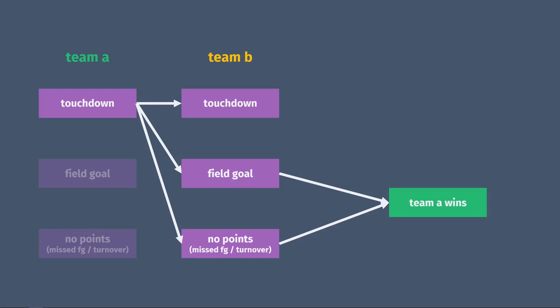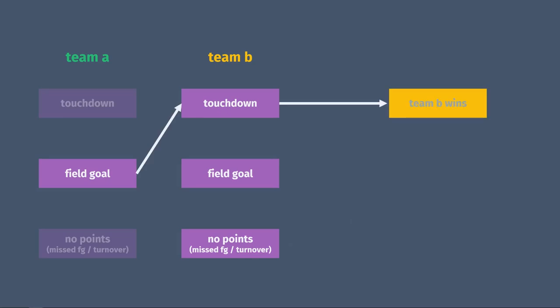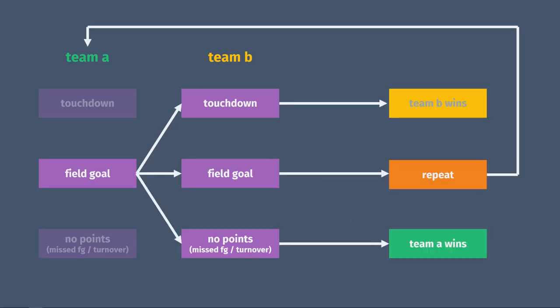If they do score a touchdown, the game will be tied, and they'll go to a second overtime round. If the first team kicks a field goal, then the second team can win with a touchdown, lose with a turnover, or tie the game with a field goal of their own, in which case there will be another round.